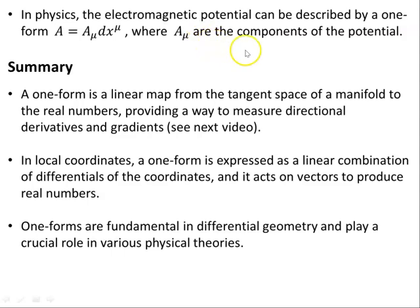In physics, the electromagnetic potential can be described by a one-form A = A_μ dx^μ, where A_μ are the components of the potential.